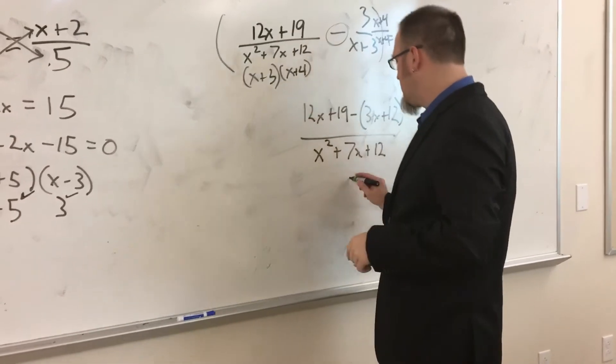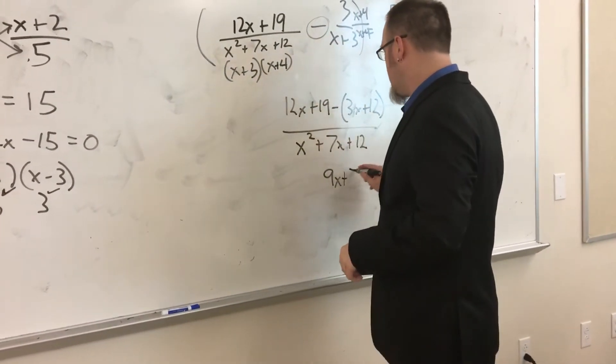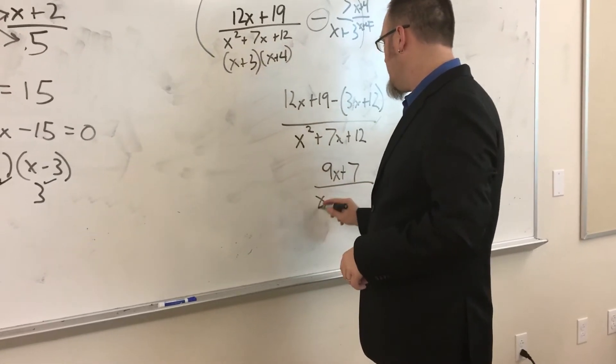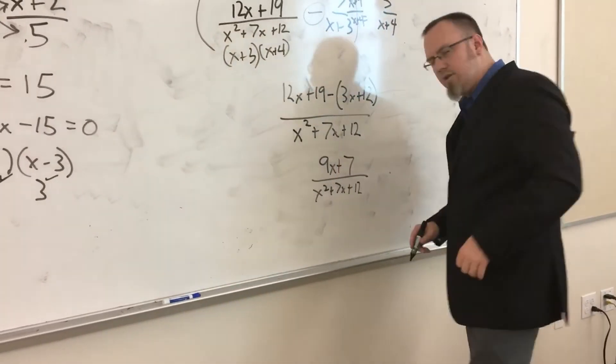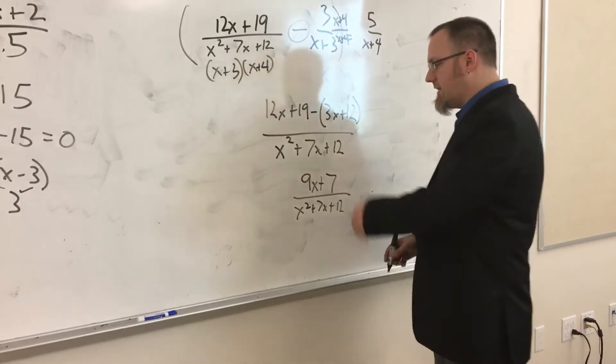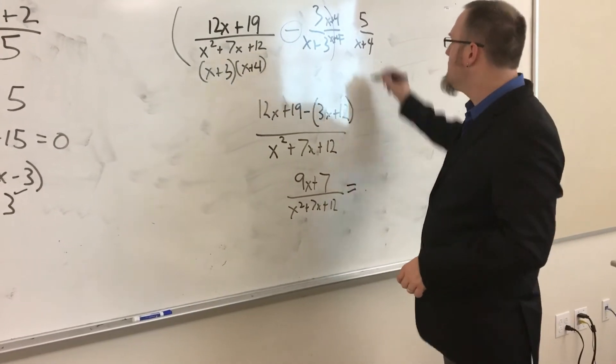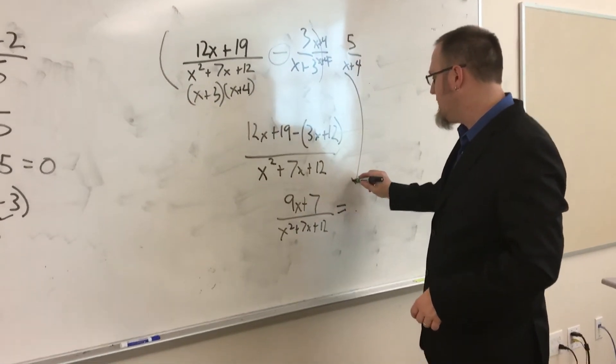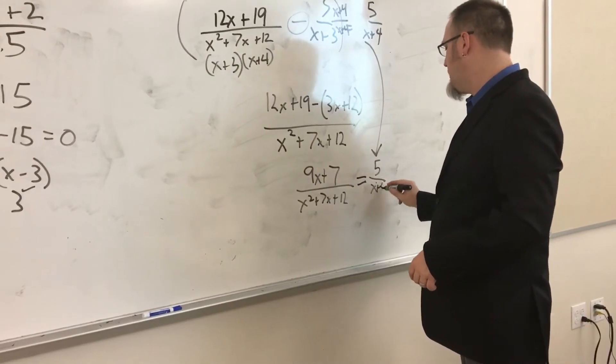So I need to kind of put it together like that so I remember to subtract each part. So 12x minus 3x is going to give us 9x. 19 minus 12 is going to give us 7. So then we have x²+7x+12 on the bottom of 9x+7, and I can't factor that 9x+7. 7's prime. It's just not going to work out. So that is now equal, this is where I bring this kind of back in, it's equal to 5 over (x+4).